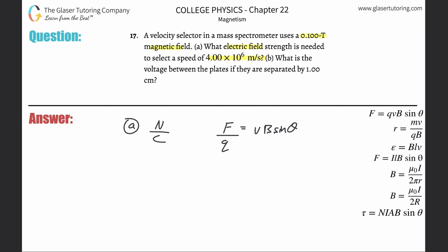So basically you can call this capital E equals VB sine theta if you want. There's a new formula. Now, it doesn't say anything about the angle, so I guess we'll assume it's 90 degrees. So if that's 90 degrees, sine of 90 is just 1, so therefore that just cancels.